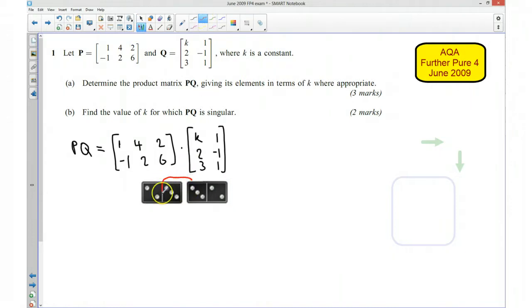Just to make that a little bit clearer, so these two bits here have to match each other, which they do, and then these two bits here will tell us what the size of our product PQ is going to be, and it's going to be a 2 by 2 matrix. Okay, right, so let's get rid of that.